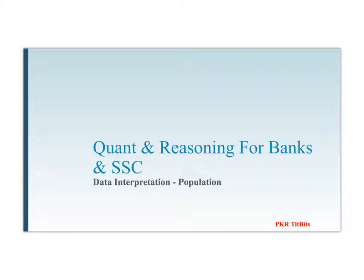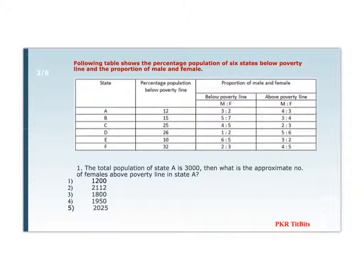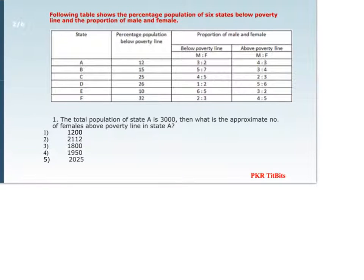Hi friends, today we are going to see data interpretation based on population and ratios. The following table shows the percentage population of six states below poverty line and proportion of male and female. We have the percentage population below poverty line and the male-to-female ratio for below poverty line and above poverty line for different states from A to F.